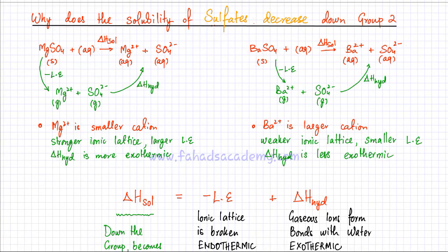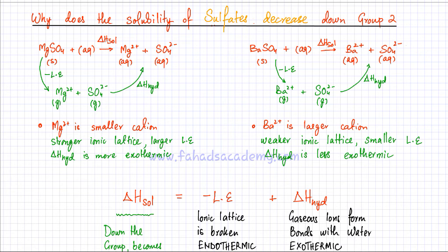In exactly a similar way, I'm going to discuss the solubility of sulfates down the group, but there's only one very slight difference. The rest of the concept is pretty much the same. The first difference is that the solubility of sulfates decreases down Group 2. Remember, when we were talking about hydroxides, the solubility of hydroxides was actually increasing down Group 2. So since it's decreasing, that means the enthalpy of solution becomes more endothermic — it becomes more and more difficult to actually dissolve a sulfate in Group 2 as you move down the group.